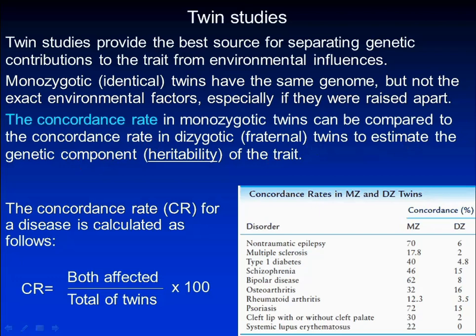The concordance rate for a disease is defined as the number of twins in which both are affected divided by the total number of twin pairs times 100.